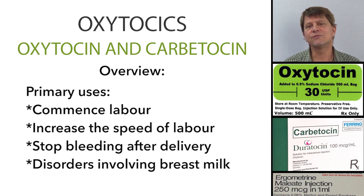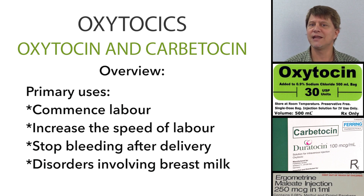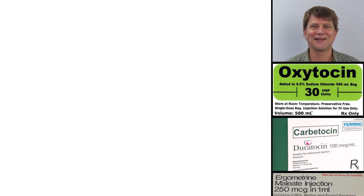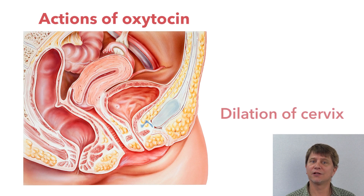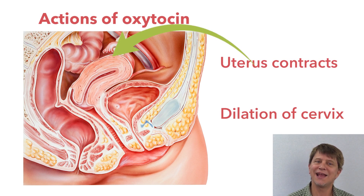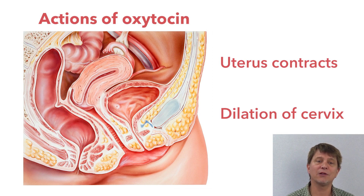In order to really understand the actions of the medicine oxytocin, we simply need to understand the most important biological functions of the hormone oxytocin. In order to give birth to a child, the mother's cervix needs to dilate and the pregnant uterus needs to contract, and oxytocin is primarily responsible for those processes.